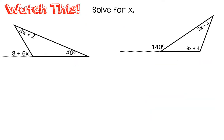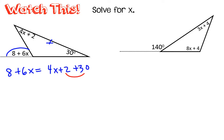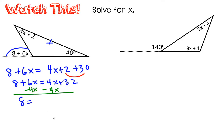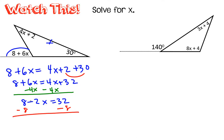This one has a little more algebra to it. I have an exterior angle and it's equal to the sum of the two interiors. So 8 plus 6x will be equal to 4x plus 2 plus 30. But this side has too many terms, so I'm going to combine them. Then I'm going to subtract 4x from both sides, and subtract 8. I'm going to get 2x equals 24, divide by 2, and get x equals 12.